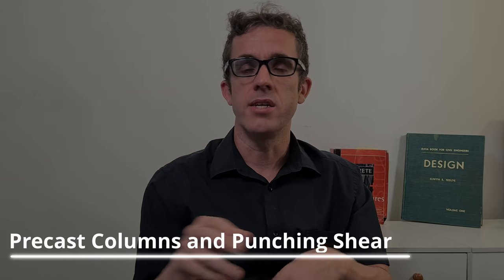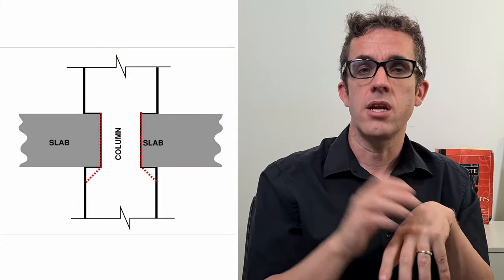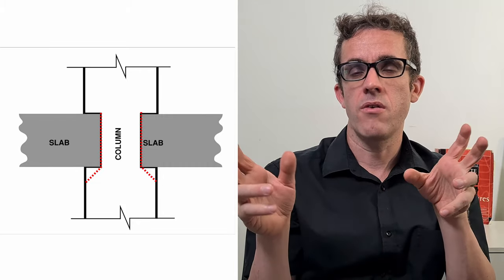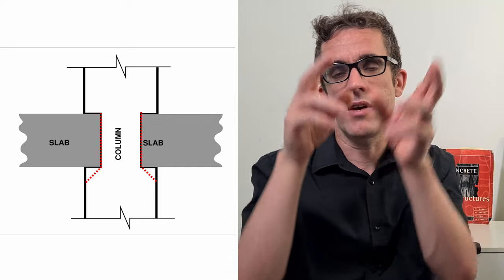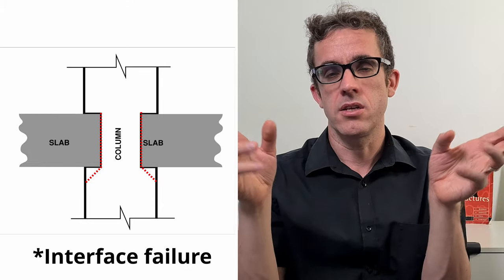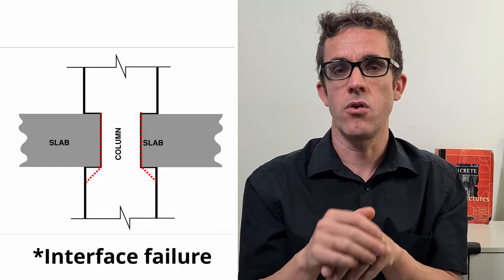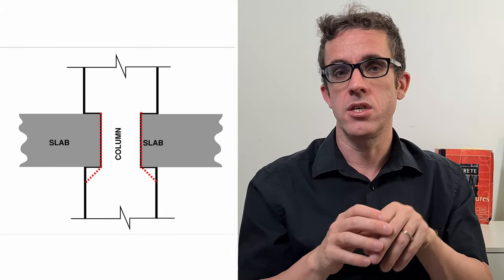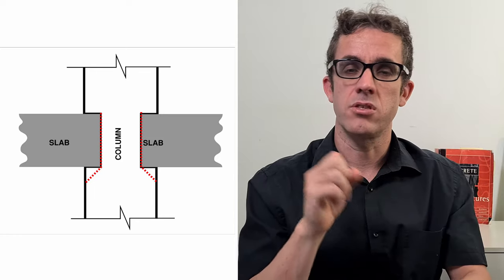Precast columns come in two configurations. The first stops the precast column and just has reinforcing bars going through, allowing you to pull the slab all the way through — this is great for punching design as you can design as per normal. The second casts a notch in the precast panel, which requires less reinforcement to joint together but creates another failure plane: a shear interface that will fail first. So there are actually two checks needed on these precast columns — first checking that interface, then moving out to the punching shear design. Pay careful attention to detailing in these areas.